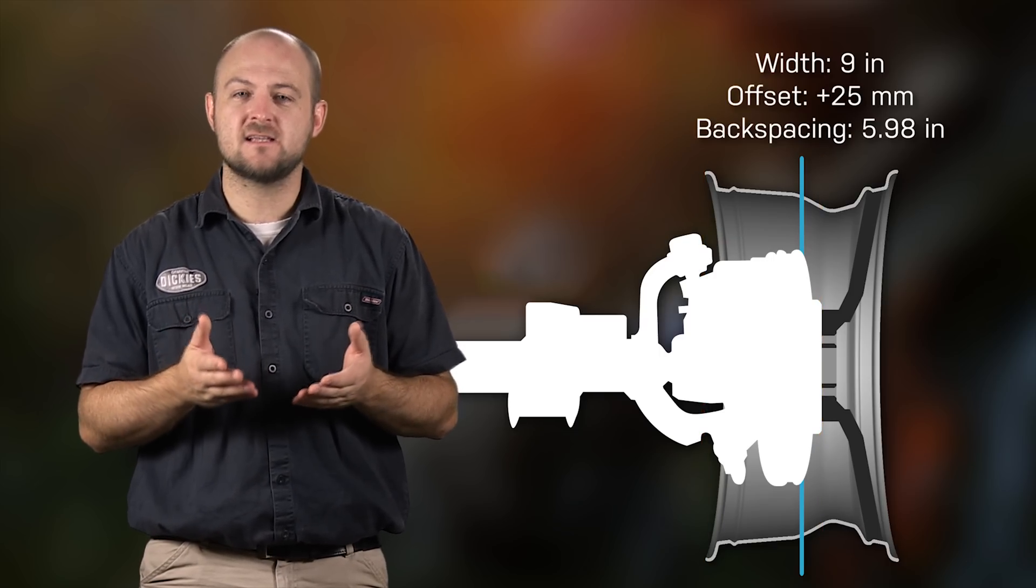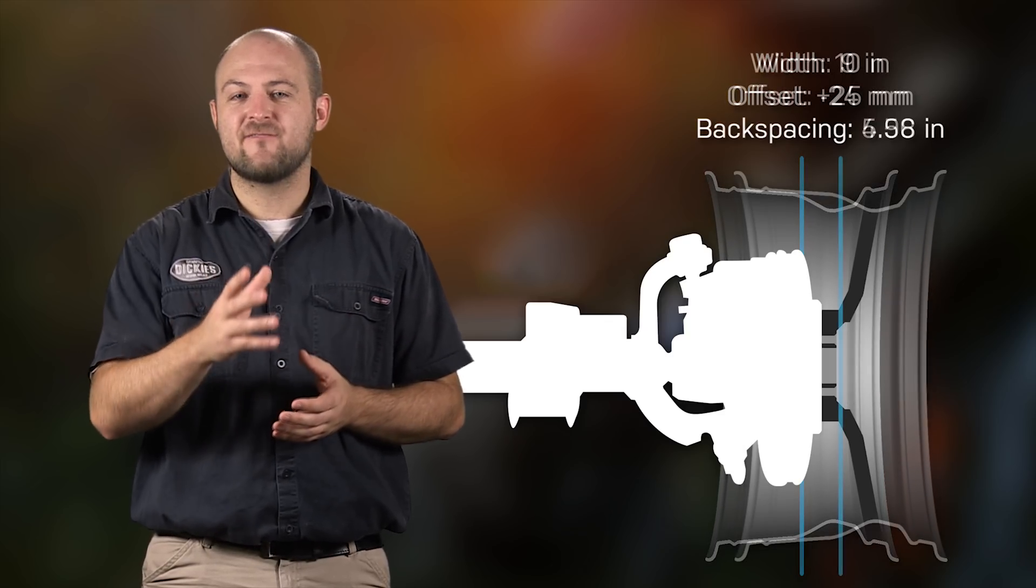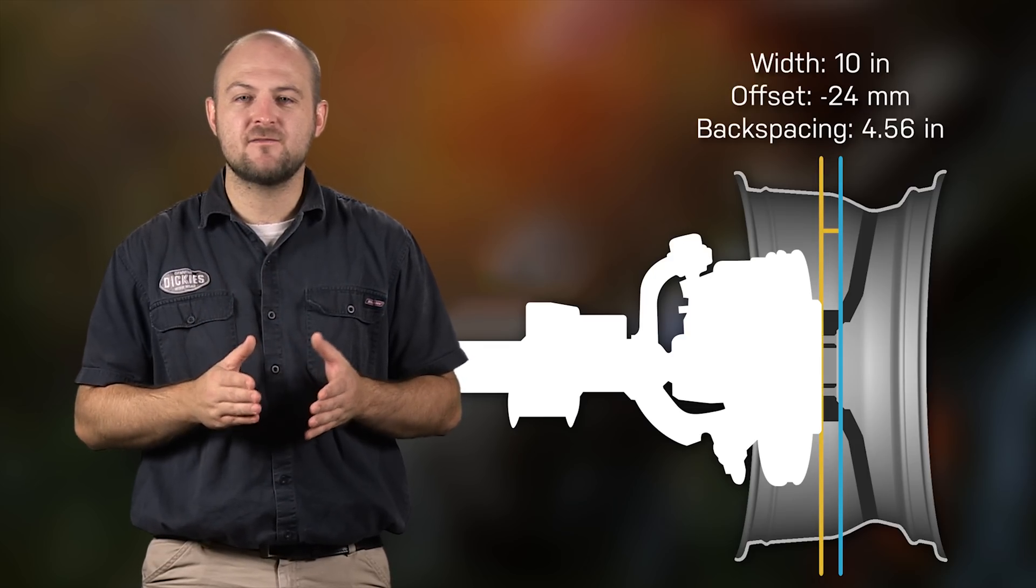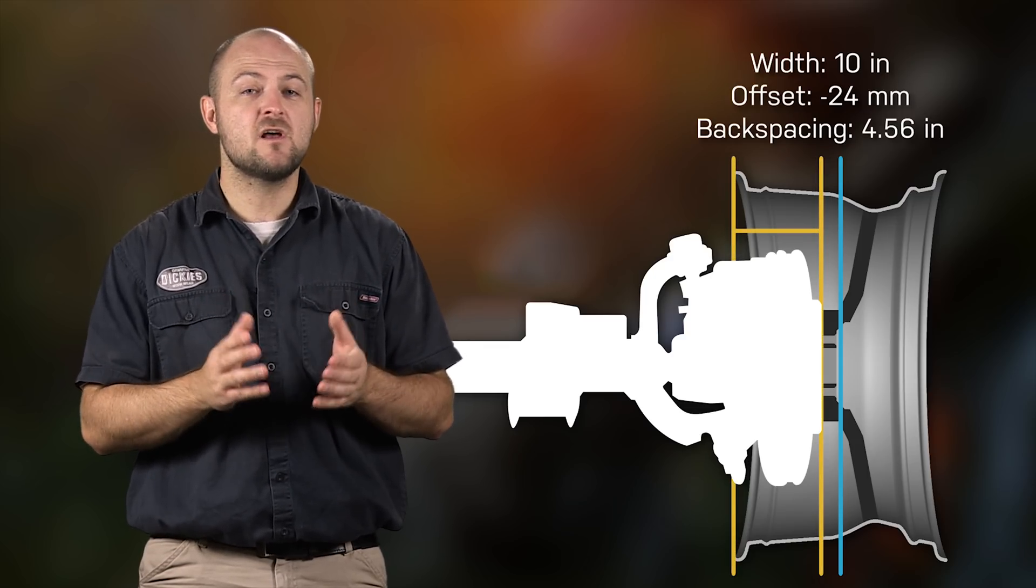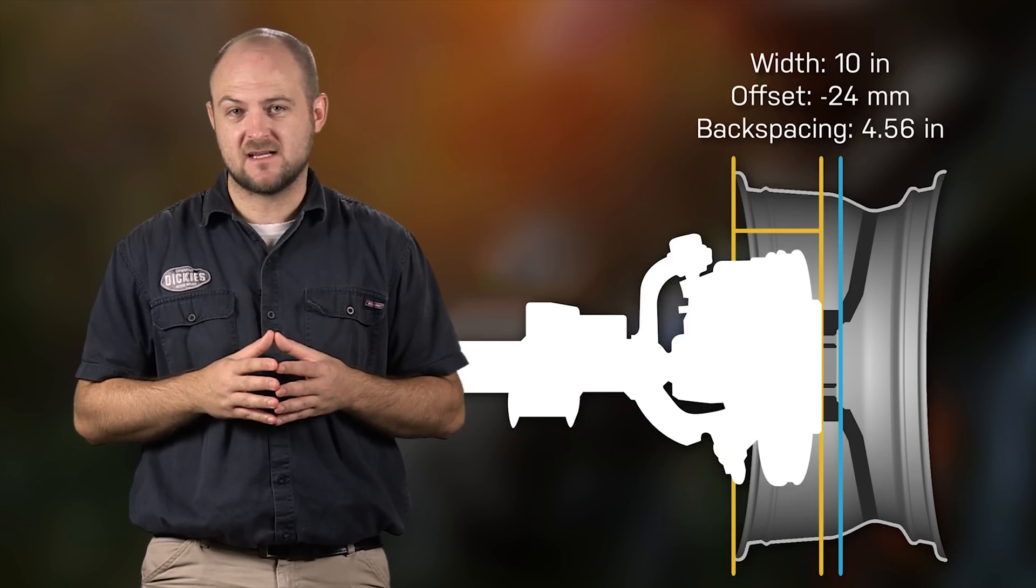The final wheel is 10 inches wide, but this one has an offset of negative 24 millimeters. Being a wider wheel, you might expect it to sit even further back than the previous two wheels. However, that's not the case. The negative offset means the mounting surface is pushed inward. This wheel has 4.56 inches of backspacing, so less of the wheel sits over the axle.